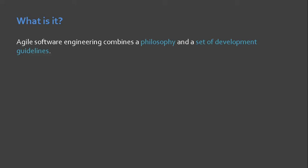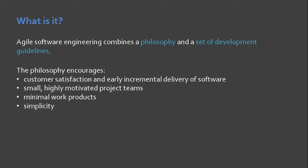So, what is agile? Agile software engineering combines a philosophy and a set of development guidelines. Take note that it is not just a process flow, but it has emerged to become a way of life for most developers. The philosophy encourages: number one, customer satisfaction and early incremental delivery of software; number two, small but highly motivated project teams; third, minimal work products; and lastly, simplicity.